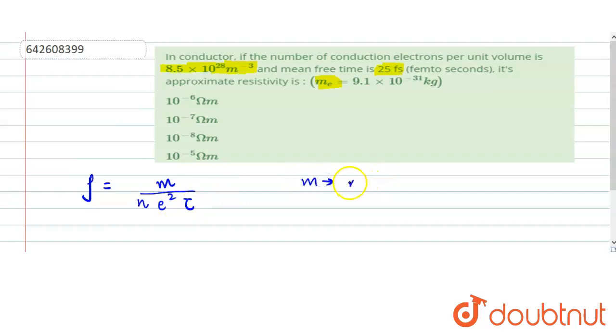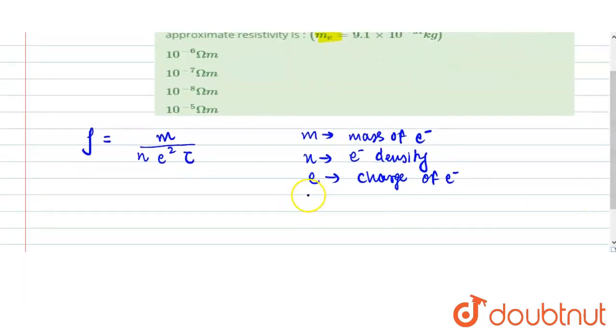where m is the mass of electron, n is the electron density, e is the charge of electron, and τ is the relaxation time.